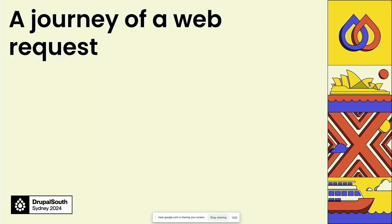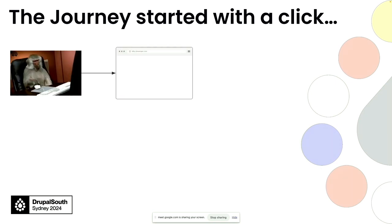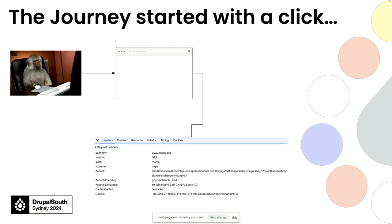We'll talk about the journey of a web request to figure out where we can improve user experience and web performance at different layers. Everything starts with a click — someone clicks a link or hits Enter in the browser. The browser then generates a request with a header that includes information about where to fetch the content the user is asking for.